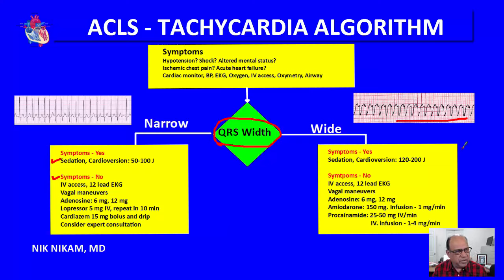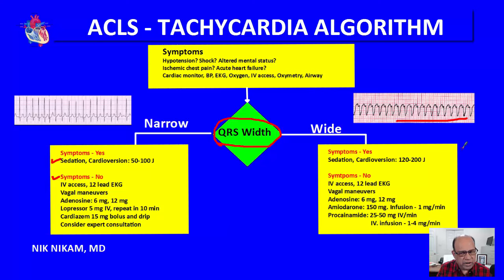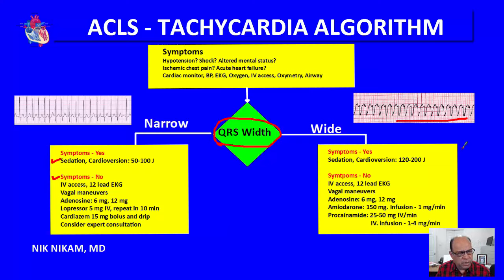If there is a good response to procainamide, start an intravenous infusion at 1 to 4 mg per minute. This is the clinical approach to a patient with symptomatic tachycardia — treating the patient, not just the arrhythmia. Anytime we use vasodilators or drugs that reduce the heart rate or blood pressure, we want to expand the intravascular volume with normal saline to maintain blood pressure. We can also elevate the legs to increase venous return to the heart.